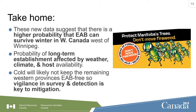The take-home from this is that these new data suggest a much higher probability that emerald ash borer can survive winter in Western Canada and west of Winnipeg, where it's well established. The probability of long-term establishment is affected by weather, climate, and the host — a bunch of things that will caveat how well it's going to do in Western Canada, all areas of active research. Critically, the cold will likely not keep the remaining Western provinces EAB-free. What's important is to maintain vigilance: survey and detection are key to mitigating the insect. If you know you have it, there are things you can do right away to start managing it and prevent those populations from growing.